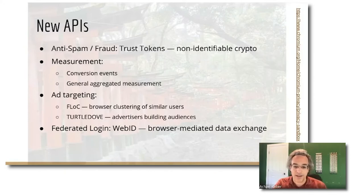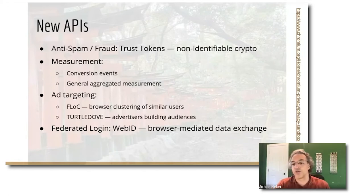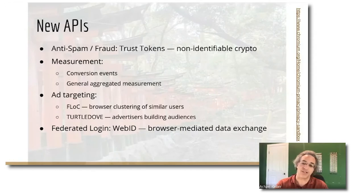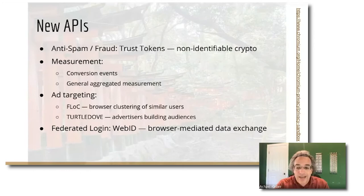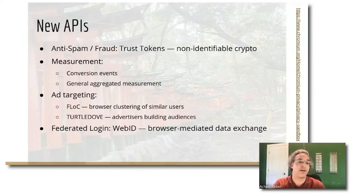Then there are some ad targeting APIs. There's one based on in-browser clustering of similar users into large cohorts that advertisers can learn about over time and choose to advertise to as a large group. There's another one based on advertisers creating their own groups to show an ad to, without the advertiser learning what site any individual person visits and without the site owner learning what advertisers are showing ads to any particular person on the site — even if the publisher and advertiser are happy to collude.